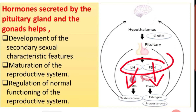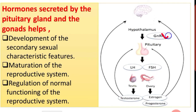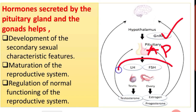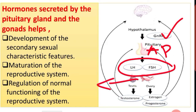To recall: Hypothalamus releases gonadotrophic releasing hormone (GnRH). This GnRH stimulates the anterior pituitary to secrete gonadotrophins — LH and FSH. LH stands for luteinizing hormone and FSH stands for follicle stimulating hormone. LH and FSH are common for both male and female. In males, LH and FSH act on the testis.